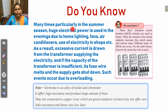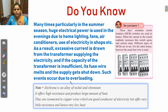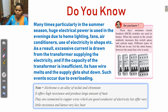Many times, particularly in summer, a huge amount of electrical power is used in the evening due to home lighting, fans, air conditioners, and use of electricity in shops. As a result, excessive current is drawn from the transformer supplying the electricity. If the capacity of the transformer is insufficient, its fuse wire melts and the supply gets shut down. Such events occur due to overloading.